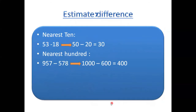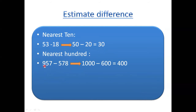For estimating the difference to the nearest 10: 53 — ones digit is 3, less than 5, so it rounds to 50. 18 — ones digit is 8, so it rounds to 20. 50 minus 20 equals 30. For nearest 100: 957 rounds to 1000 (tens digit is 5, so 9+1=10, giving 1000). 578 — tens digit is 7, so 5+1=6, giving 600. 1000 minus 600 equals 400.